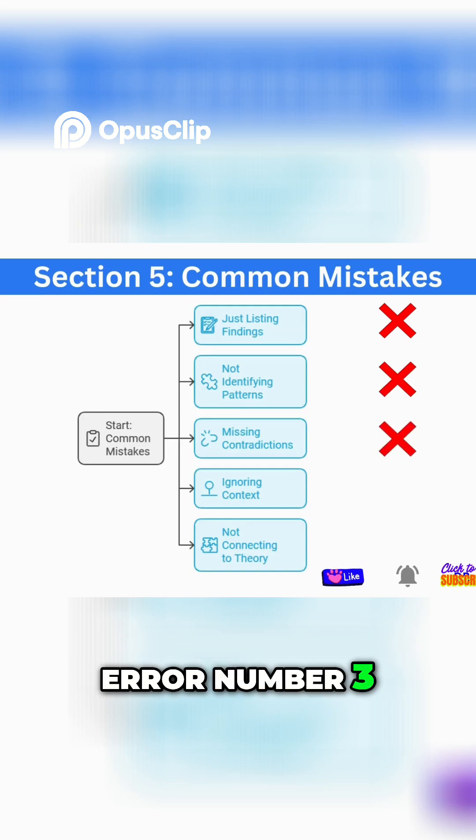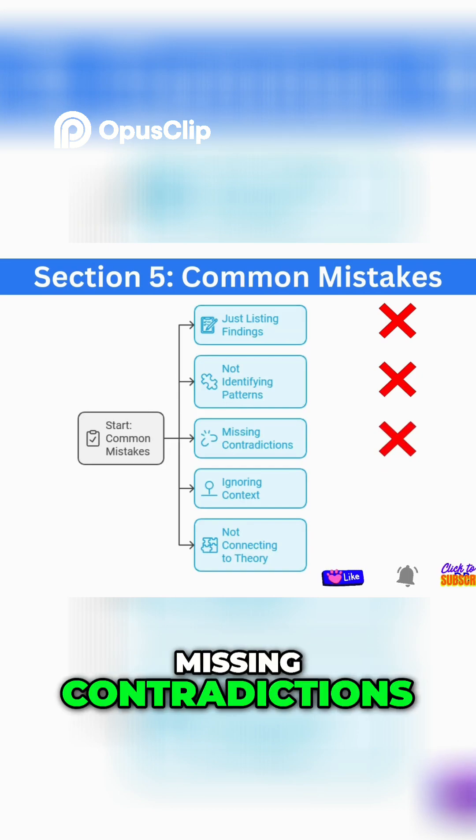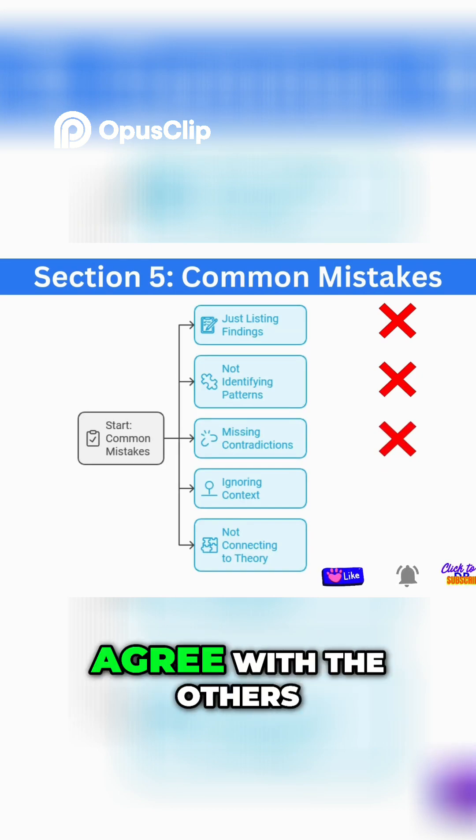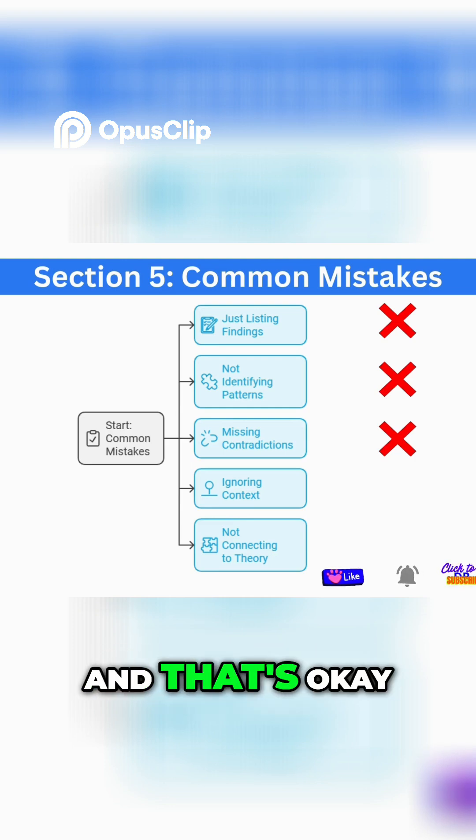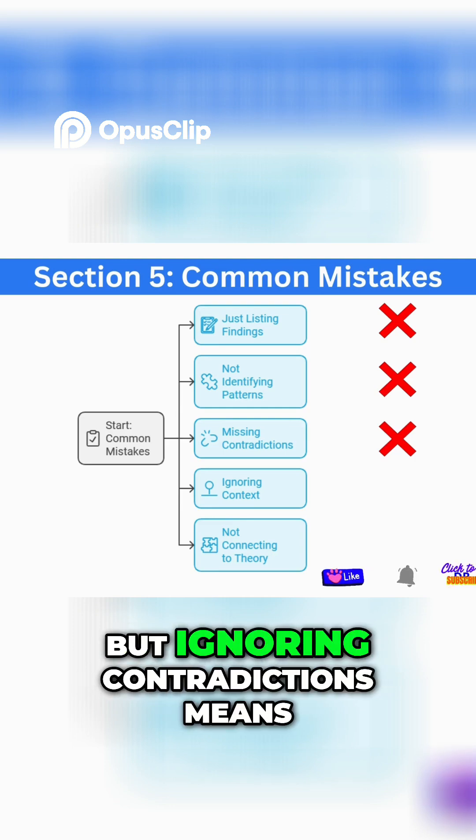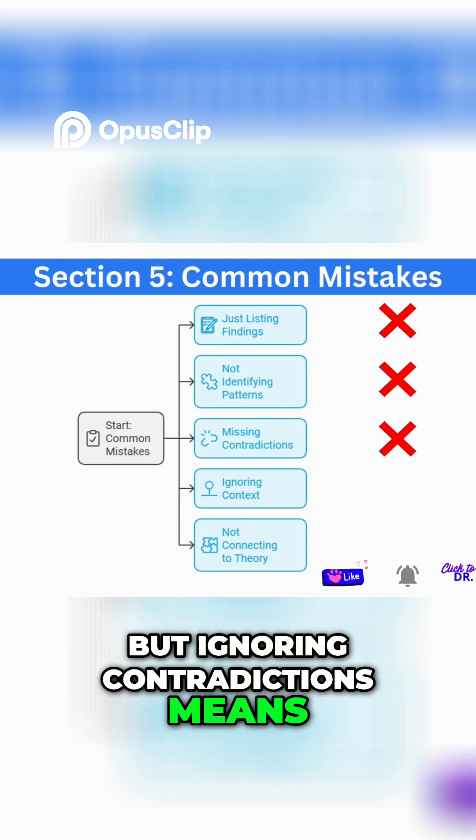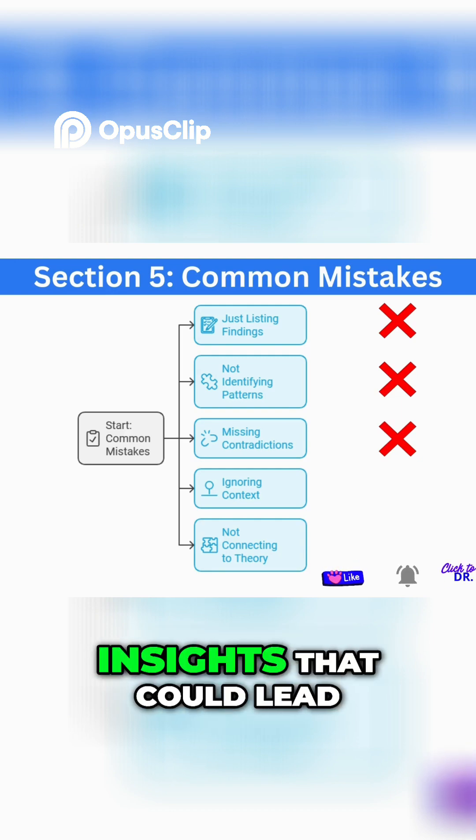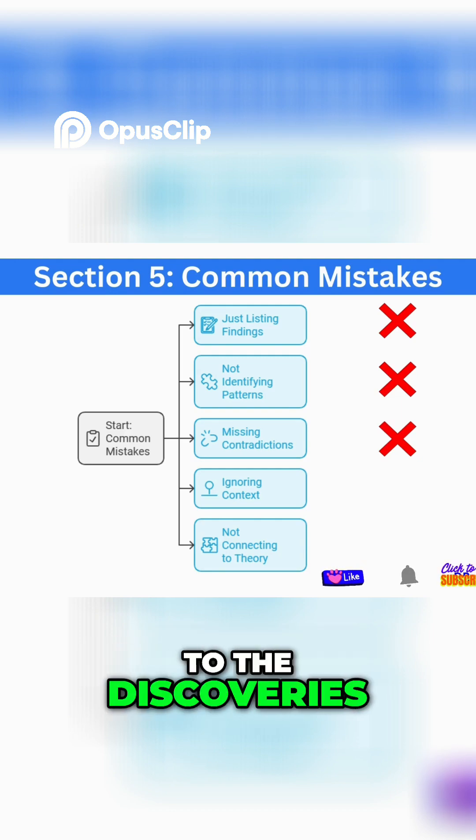Error number three: missing contradictions. Not every study will agree with the others and that's okay, but ignoring contradictions means we are missing important insights that could lead to discoveries.